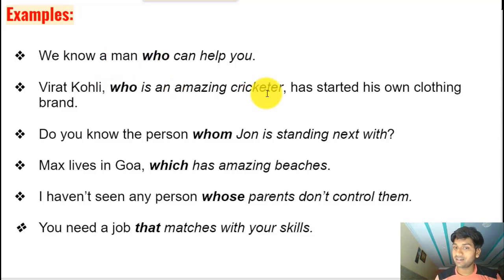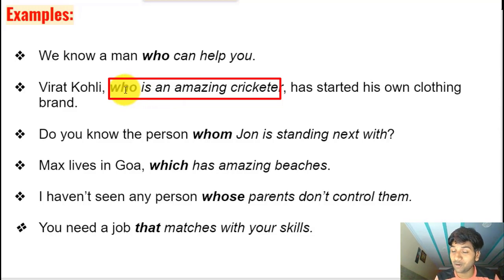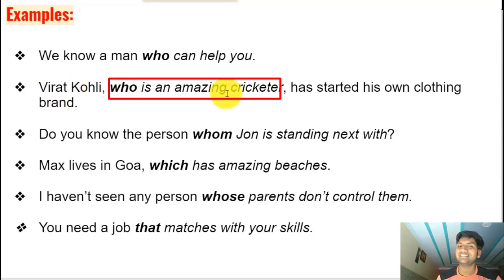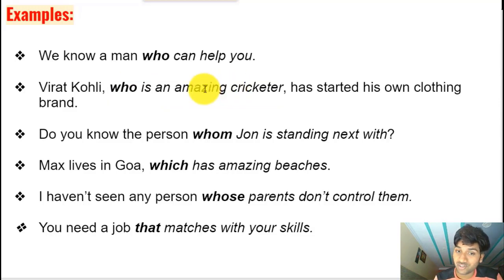'Virat Kohli, who is an amazing cricketer, has started his own clothing brand.' Here the adjective clause 'who is an amazing cricketer' gives extra information about Virat Kohli. Since Virat Kohli is already a specified, identified person, whatever information we give about him is non-essential. That's why the clause is offset with commas before and after — it's a non-essential adjective clause.